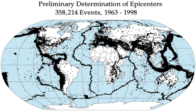Tectonic earthquakes occur anywhere in the Earth where there is sufficient stored elastic strain energy to drive fracture propagation along a fault plane. The sides of a fault move past each other smoothly and aseismically only if there are no irregularities or asperities along the fault surface that increase the frictional resistance. Most fault surfaces do have such asperities and this leads to a form of stick-slip behavior. Once the fault has locked, continued relative motion between the plates leads to increasing stress and therefore stored strain energy in the volume around the fault surface.